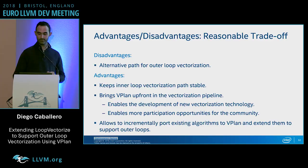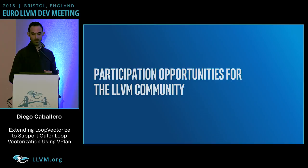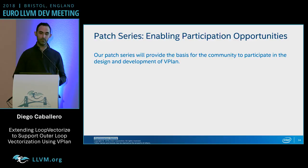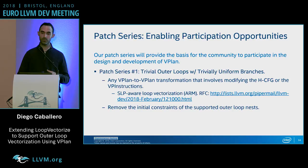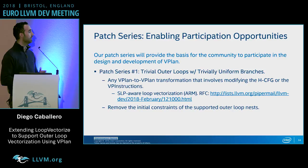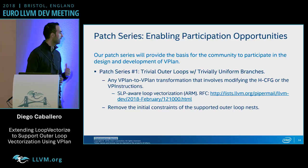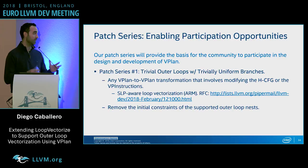Let me talk about participation opportunities. The idea with this patch series is to bring all the basic infrastructure so that everybody can use vPlan up front in the vectorizer pipeline. Patch series one introduces technology for the hierarchical CFG and vP instructions, enabling new vectorization technology to be built. For example, we are currently collaborating with ARM — they are developing a proof of concept of SLP-aware loop vectorization.